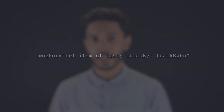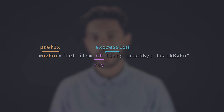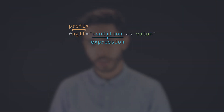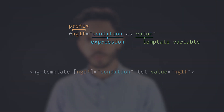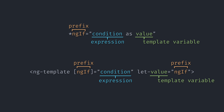Also, in that ng-for example, ofList in letItemOfList is also a key expression. ng-for is the prefix, of is the key, list is the expression. That gets desugared to an ng-template with the ng-for-of directive pointing to list. The last thing to mention is the optional AS keyword at the end of the expression. It declares a template variable and maps the result of the expression to it. Star ng-if condition as value becomes an ng-template with the ng-if directive pointing to condition, and letValue pointing to ng-if.